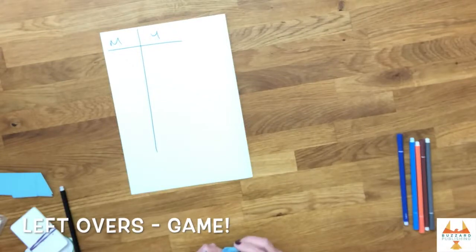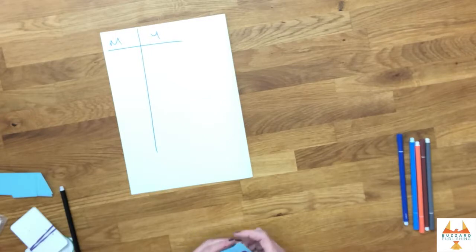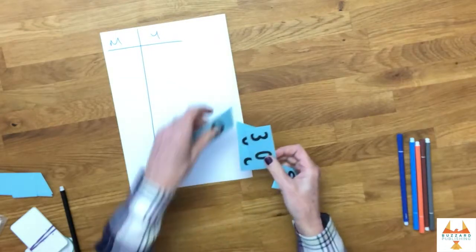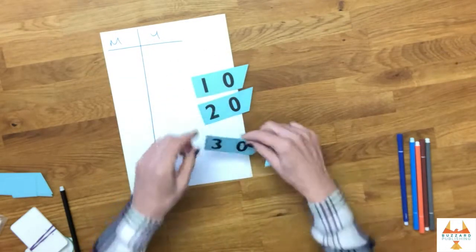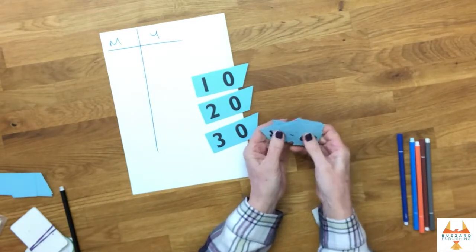We're going to play Leftovers, a game to practice using our three times table to divide and find remainders. For this game we've got place value cards 10, 20 and 30, and then the ones digits from zero to nine.